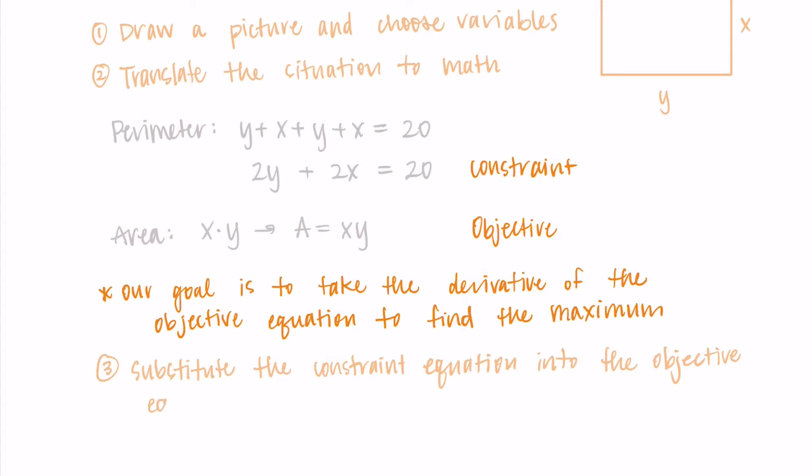What I want to do instead is use the constraint equation to help me take the derivative of the objective. My next step is going to be to substitute the constraint equation into the objective equation so that we only have one variable that we're worried about. So I have 2y + 2x = 20. I'm going to solve so I have y equals something, and then plug it into my objective.